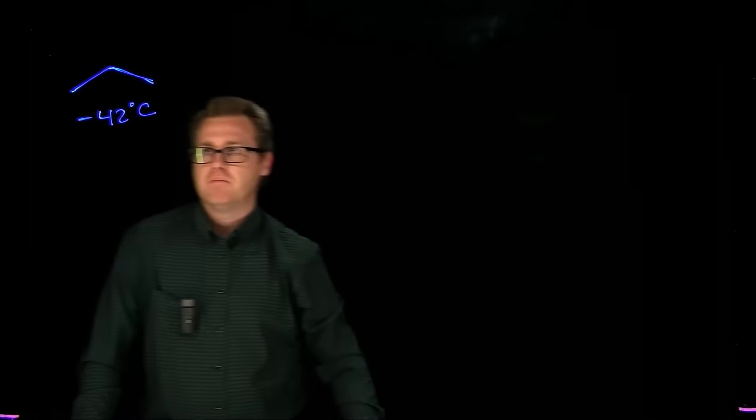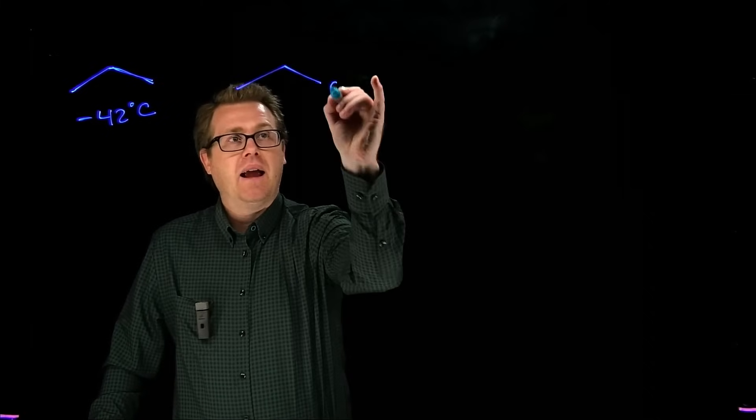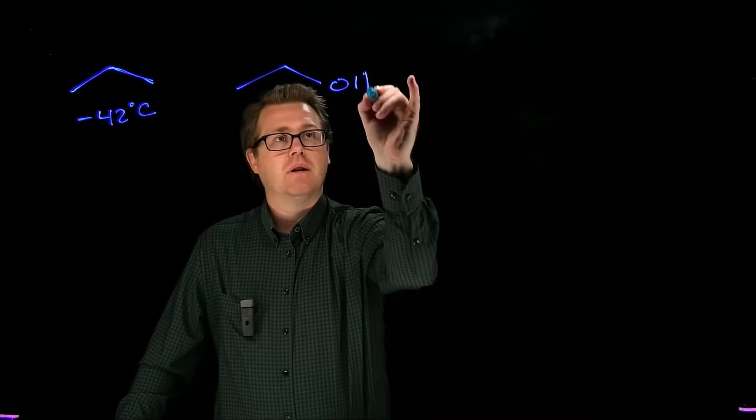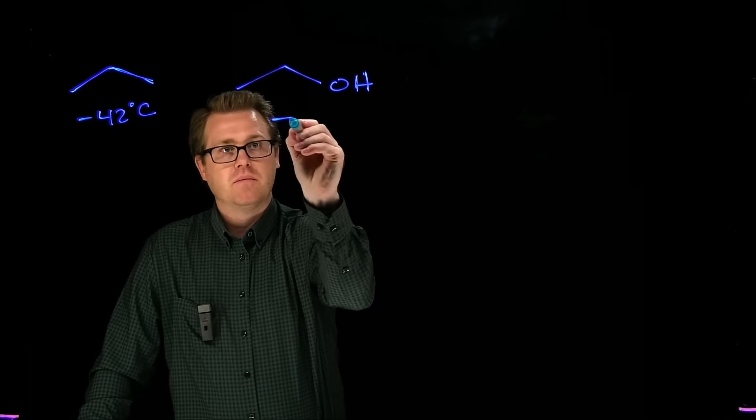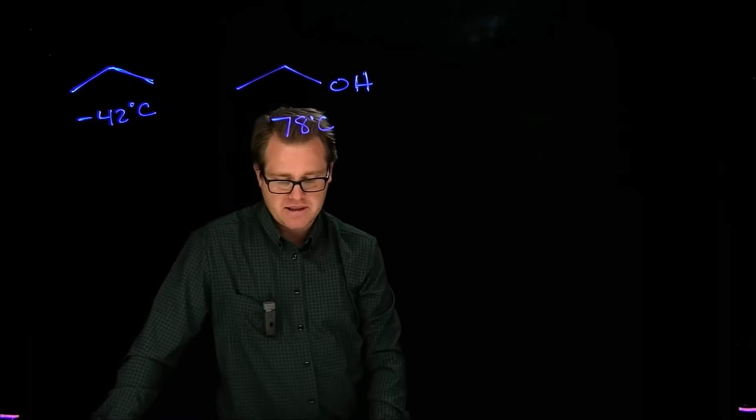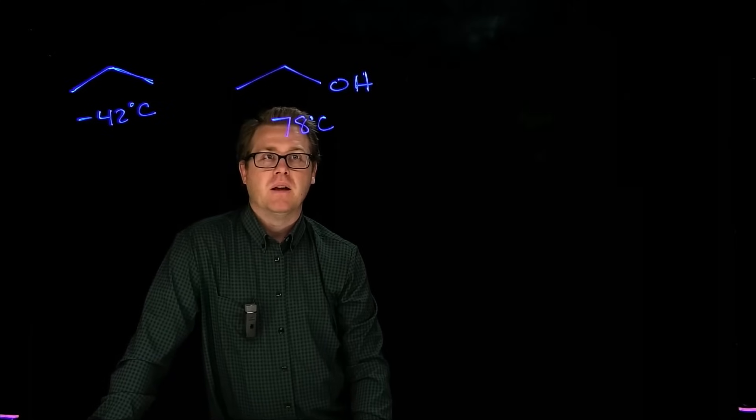Let's take a look at some physical properties and do a comparison amongst different types of functional groups. Let's say we take a propane molecule - a simple alkane. What is its boiling point? Negative 42 degrees Celsius - a very, very low boiling point. Now what if we had an alcohol, like ethanol? Look how much it jumps - 78 degrees C. That's the boiling point of ethanol. Major jump.